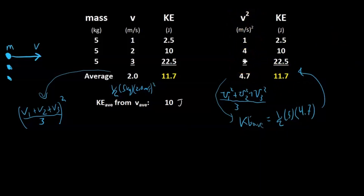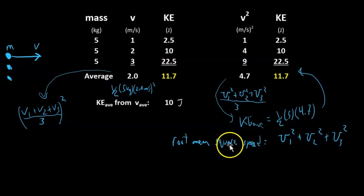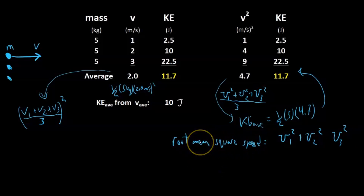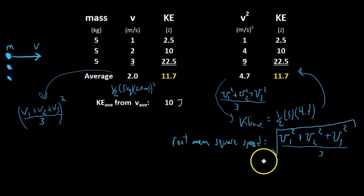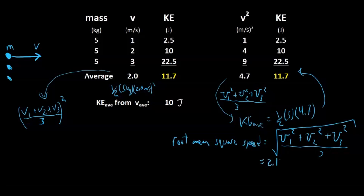Now, when we say root mean squared speed, we read the name from right to left. First, we square each speed: v₁², v₂², v₃². Then we take the mean — add them all up and divide by the number of objects (3 in this case). Finally, we take the square root. The square root of 4.7 is approximately 2.17, so our root mean squared speed is 2.17 meters per second.